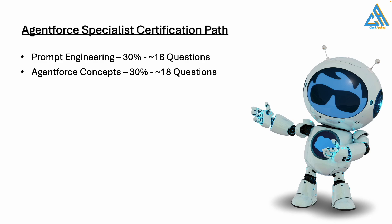The second section is Agentforce Concepts. It also contributes around 30% of the exam — approximately 18 questions. You'll learn about the Reasoning Engine that powers the agents, and standard and custom topics. How an agent interprets what is typed in the chat, assigns a topic, selects the most relevant topic, and then links that topic to an action so the related action is performed. User security is one of the most important aspects here — what kind of security is needed for the objects and other sections referenced by an agent.